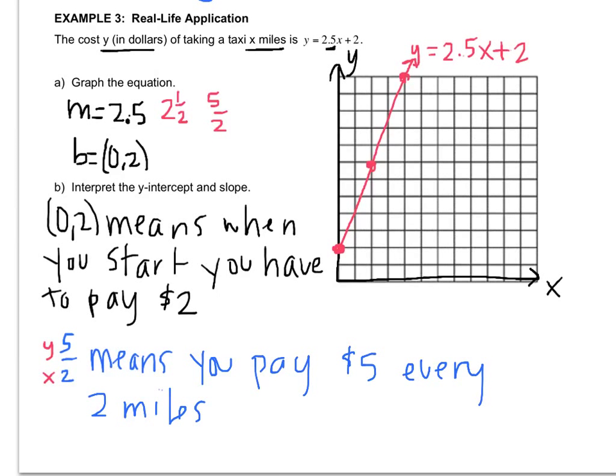So, if you wanted to reduce 5 over 2, that's 2.5 like it was originally. So, you could say you pay $2.50 for every mile. You could also say that, that would be correct as well.